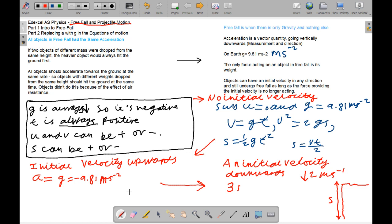The only force acting on an object in freefall is its weight. And knowing that weight is Mg, its mass times the value of G, 9.81, is very, very useful as it gives us our force. Objects can have an initial velocity in any direction and still undergo freefall as long as the force provided the initial velocity is no longer acting on that object.